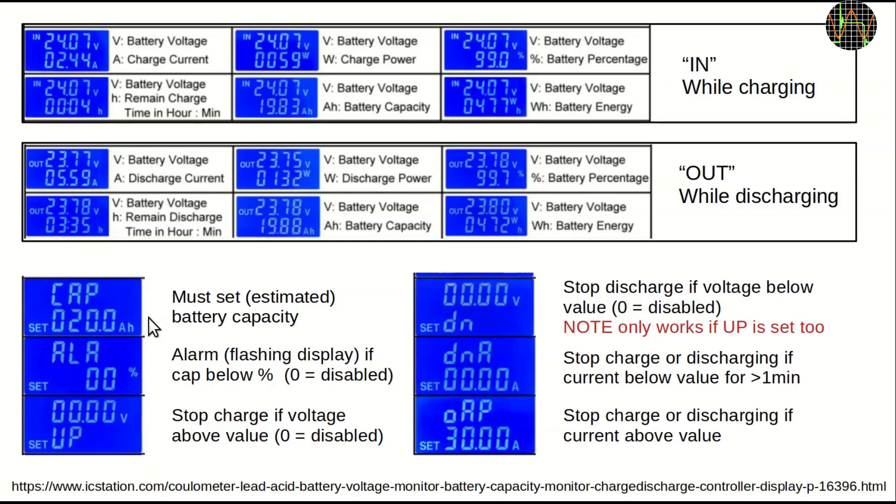Followed by ALA, which is optional and just makes the display flash if the remaining capacity drops below the stated threshold. Nothing else happens. UP can be set and will disengage the relay and thereby stop the charge if the battery voltage exceeds the stated number. If this function is not needed, set the number to zero.